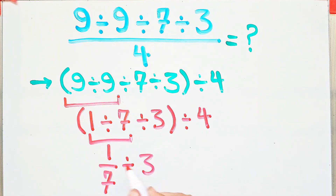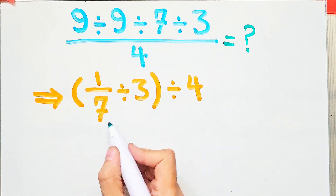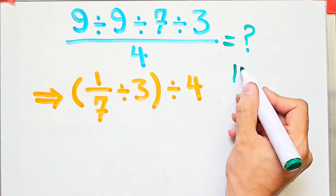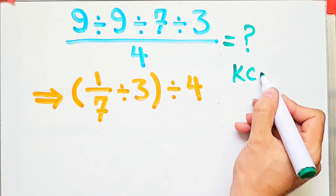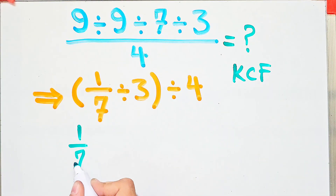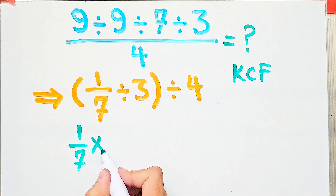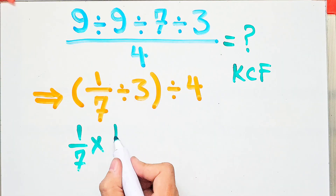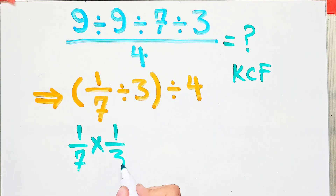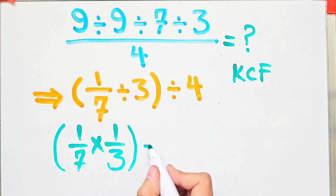We have 1 over 7, divided by 3, then divided by 4. We simplify the parentheses using the KCF rule: K stands for keep, C stands for change, and F stands for flip. We keep the first fraction, change the sign, and flip the second number. The new expression is 1 over 7 times 1 over 3, then divided by 4.